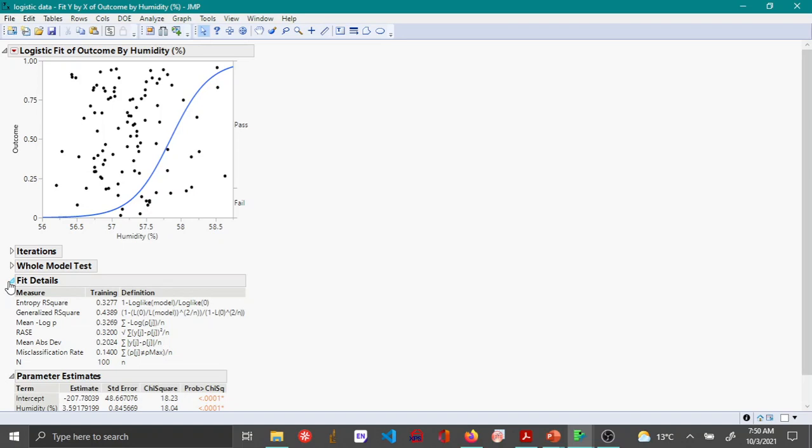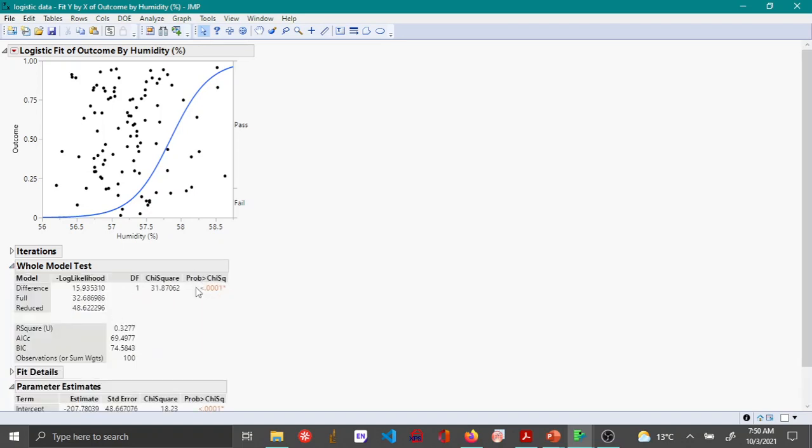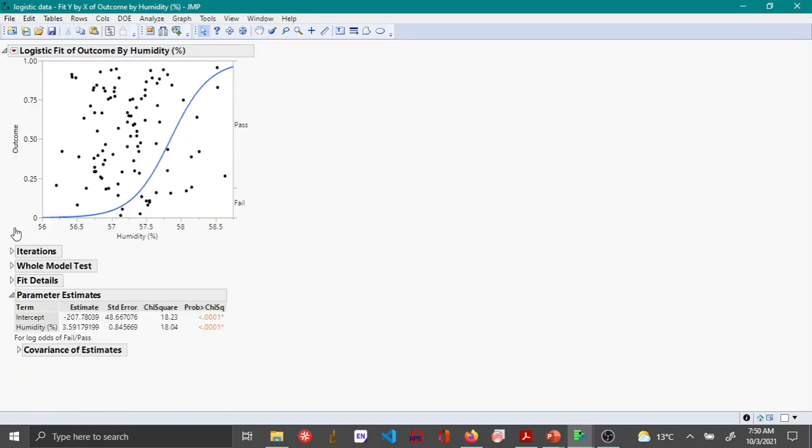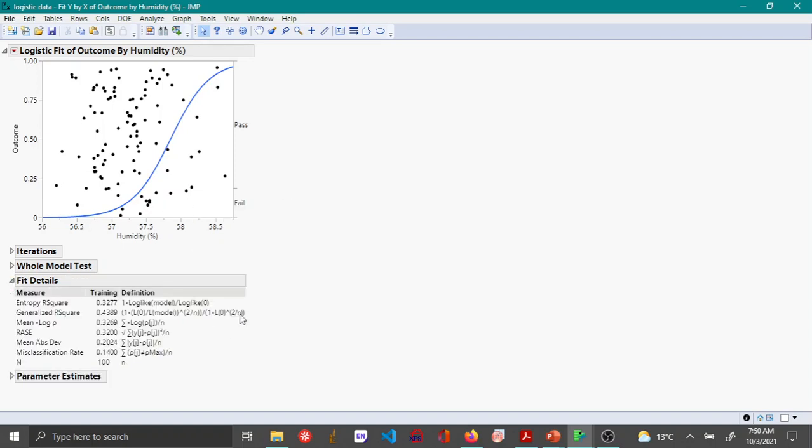Under the whole model, as usual you have the probability greater than chi-square which has a value of less than 0.05, which means this model is significant. So this basically introduces logistic regression, but later on we'll see if we can build a more complex model by doing logistic regression with multiple predictor values and trying to see if we can reduce this misclassification rate.